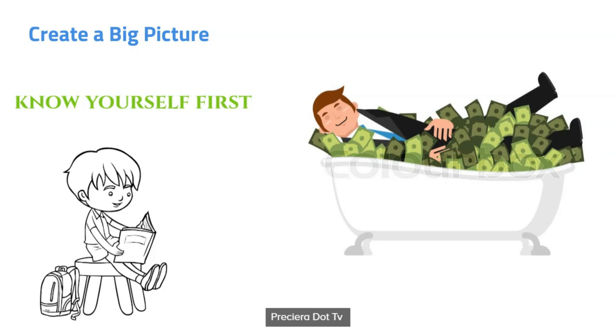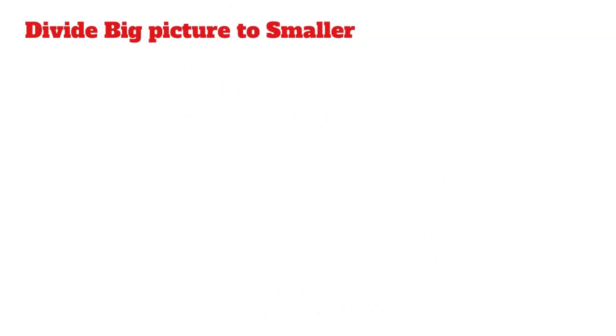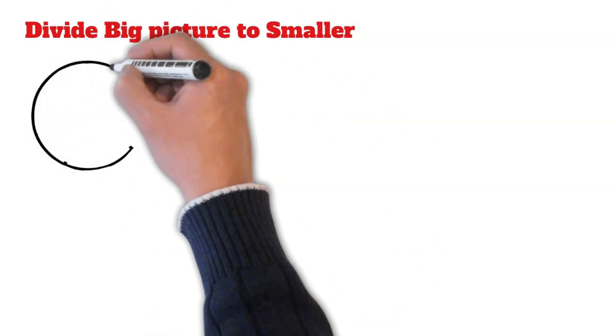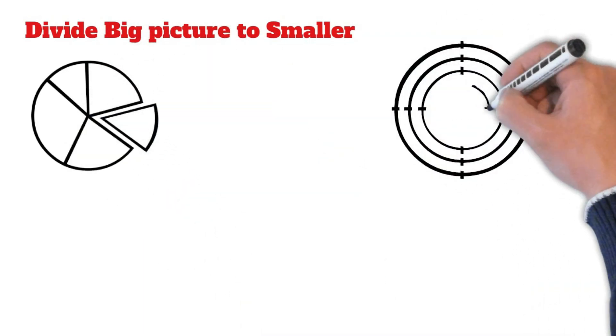Divide the picture of your goals into smaller. After having a big picture of what you want to happen in your life, this time you need to break it down into a series of small picture goals to achieve your main picture goals.